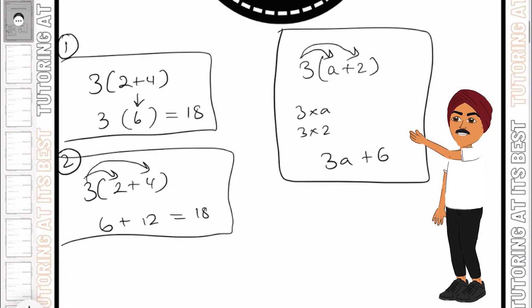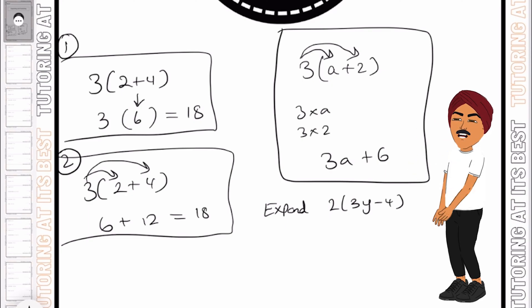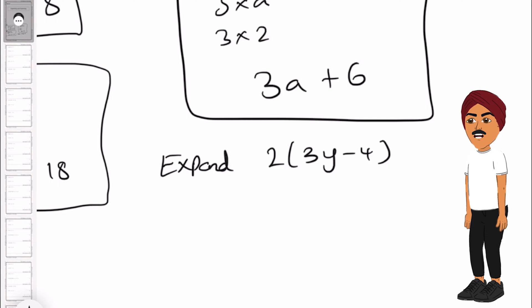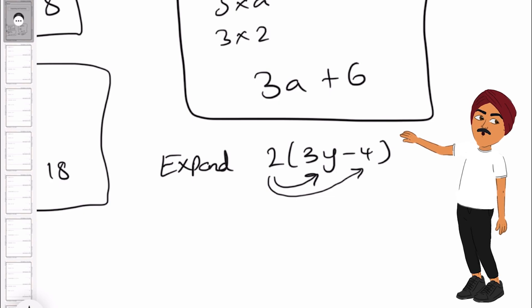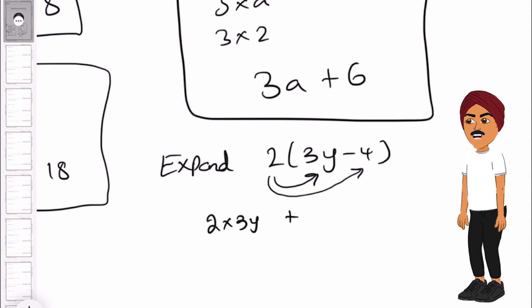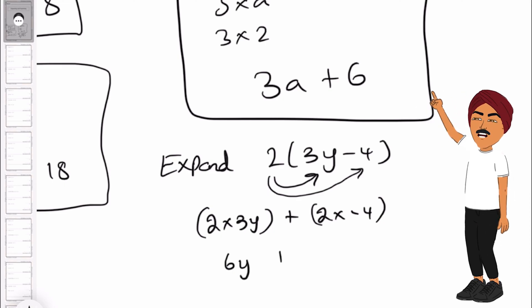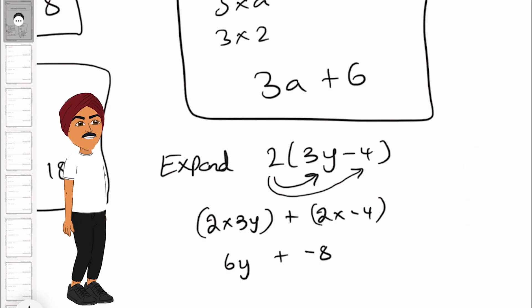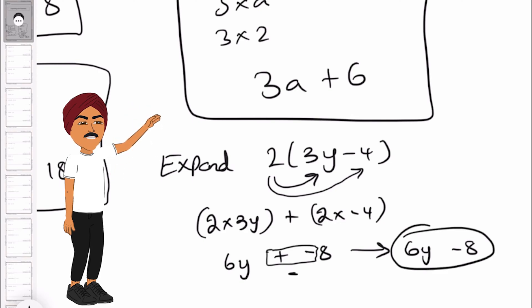Let's take a look at one more example: expand 2(3y − 4). The rule is that the number outside the bracket must be multiplied by each number inside the bracket and the results added together. So that's 2 times 3y, plus 2 times minus 4. We know 2 times 3y gives us 6y, and 2 times minus 4 is minus 8. So that gives us 6y minus 8, because a plus and a minus gives a minus, and that is our answer.